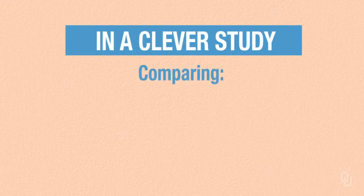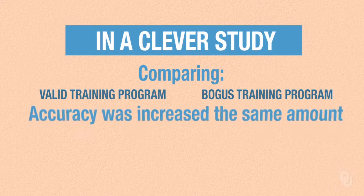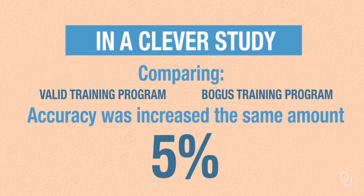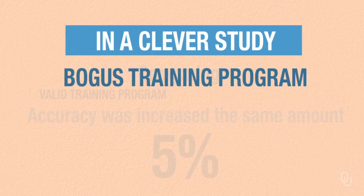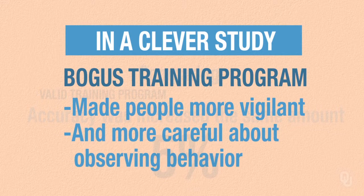In a clever study comparing a valid training program to a bogus training that gave people no information at all, Tim Levine and his colleagues increased accuracy the same amount — no more than about 5% in either one over people who got no training at all. The bogus training probably did the same thing the valid training did: it made people more vigilant and careful about observing behavior, and that's about it.